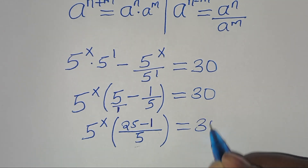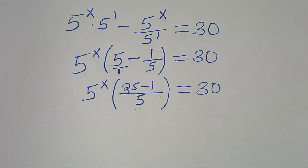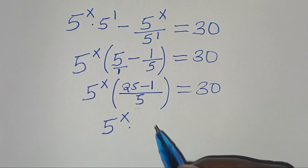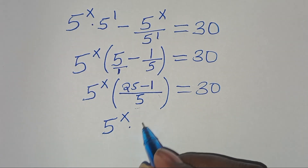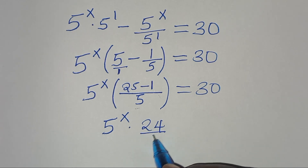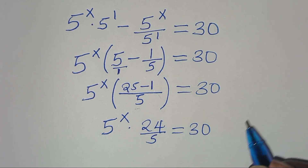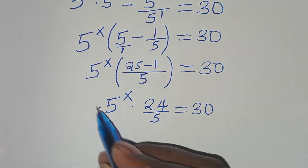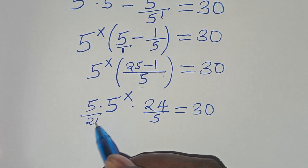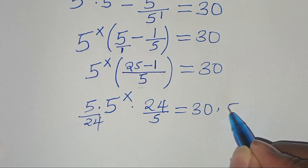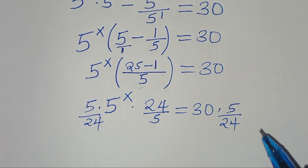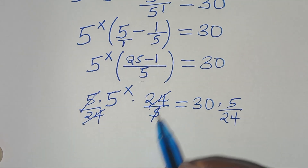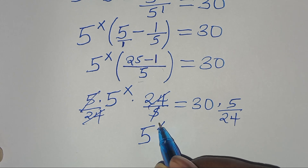So we have 5 to the power of x multiplied by 25 minus 1, which is 24 over 5. This is equal to 30. So let's multiply both sides by 5 over 24. Here we also have 5 over 24, so 5 and 5 simplify, and 24 and 24 simplify, so that we have 5 to the power of x.